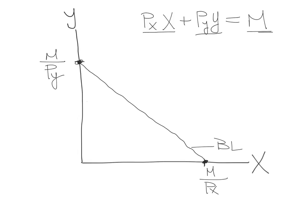These budget lines are combinations of goods where the consumer actually spends all his or her income. Notice that if the consumer buys a bundle inside the budget line, the consumer is not spending all her income. And if the consumer buys a bundle outside of the budget line, the consumer cannot afford that bundle because the budget line tells you how much the consumer can do.